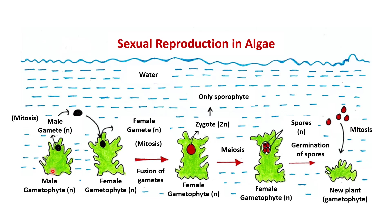Here is the male algae plant and here is the female algae plant. Both are gametophytes, and as I have already told, gametophytes are haploids. That means all cells of these two plants are haploid. The male gametophytic plant produces haploid male gametes via mitosis, since the main body is haploid. Similarly, the female gametophyte produces haploid female gametes via mitosis.